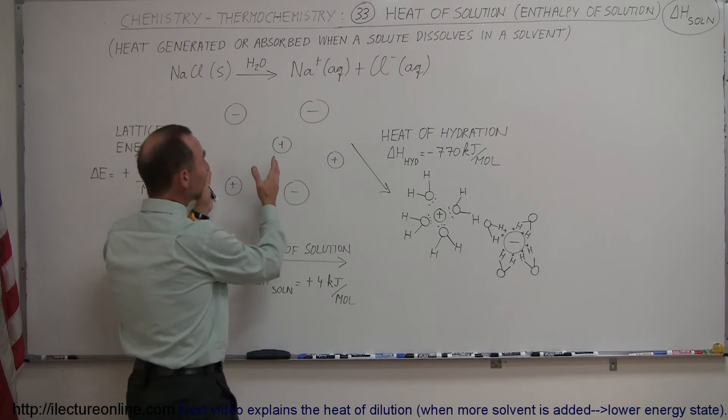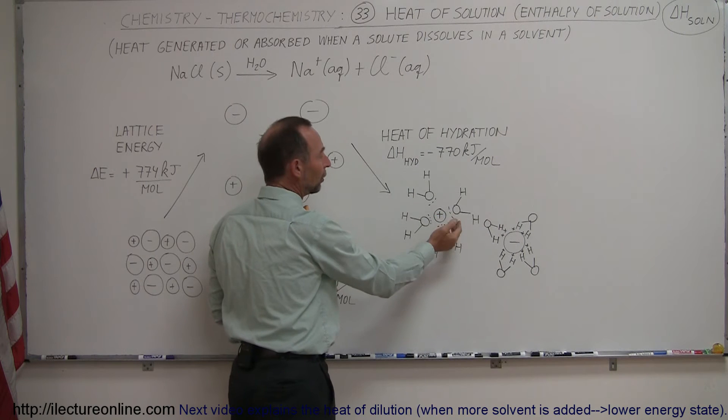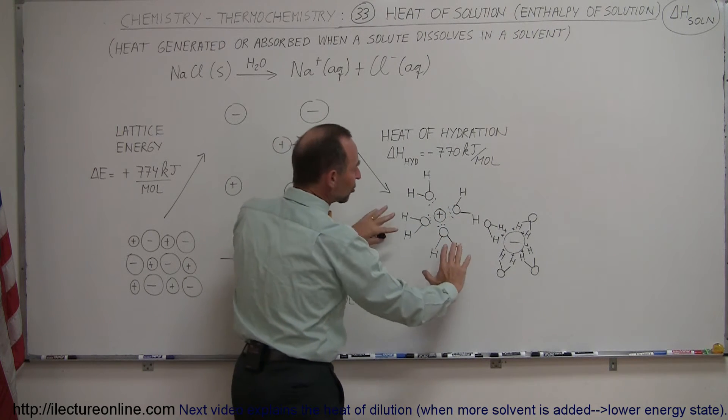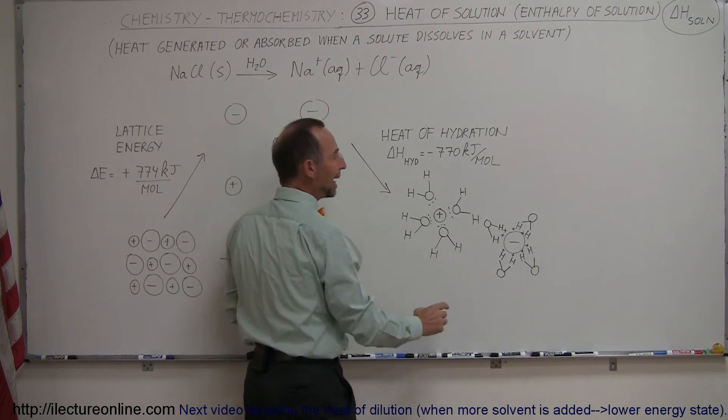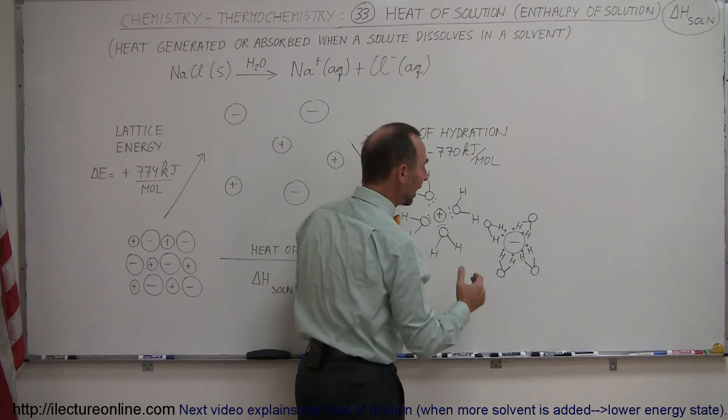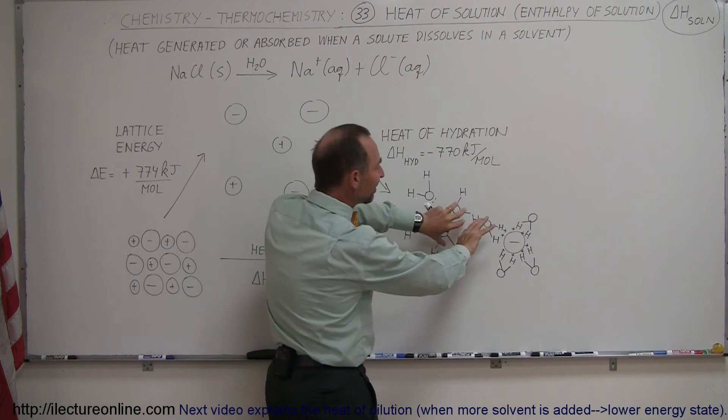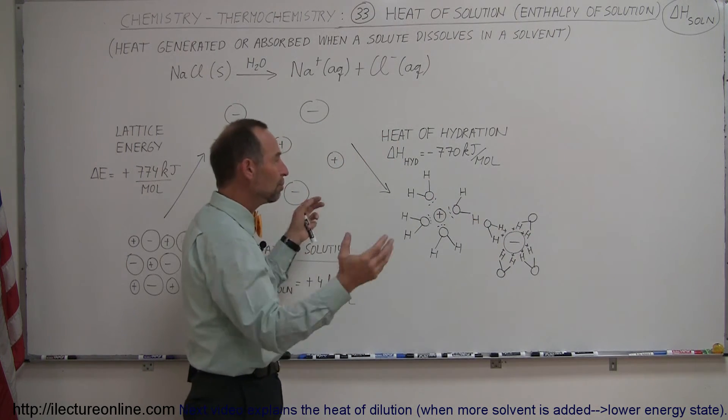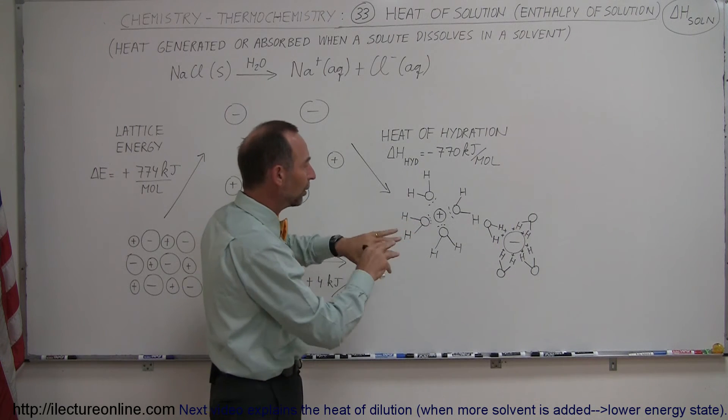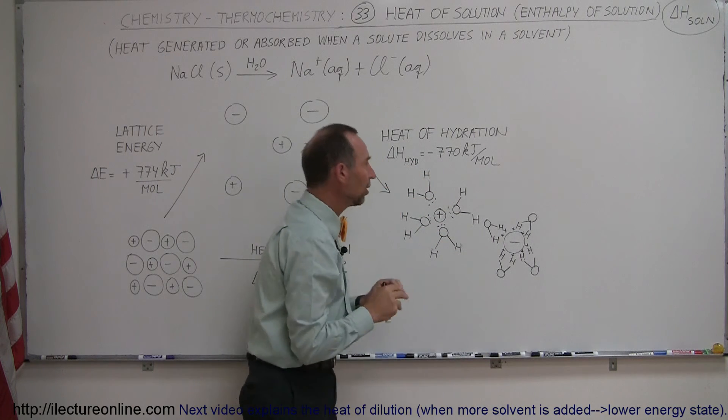Then, when you go ahead and take those ions and put them into a solvent such as water, water molecules are polar. And so the negatively charged end of the water molecule will attract itself to the positive sodium ion. And the positive side of the water molecules, or the side where the hydrogens are at, they'll be attracted to the negative chlorine ion and kind of surround them and cause them to be separated from one another.